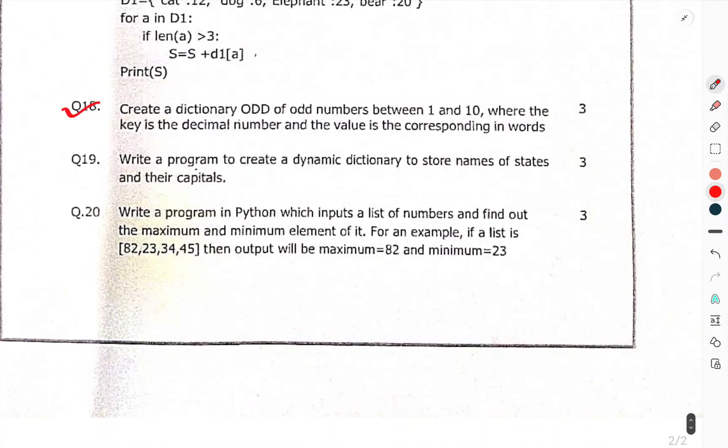Question 18: Create a dictionary of odd numbers between 1 to 10, where the key is the decimal number and the value is corresponding in words. Write a program to create a dynamic dictionary to store names of states and their capitals.